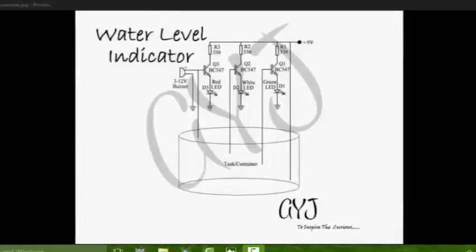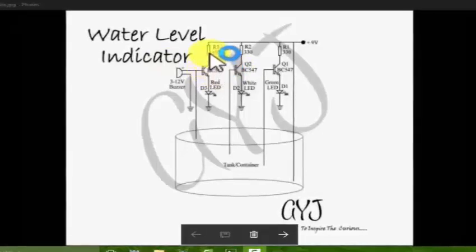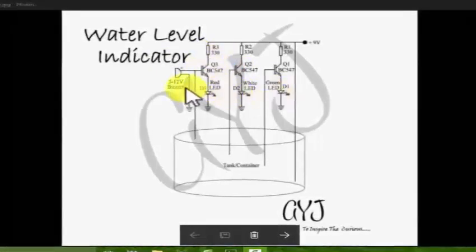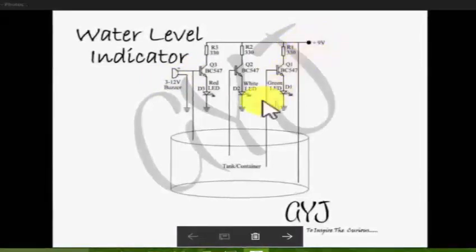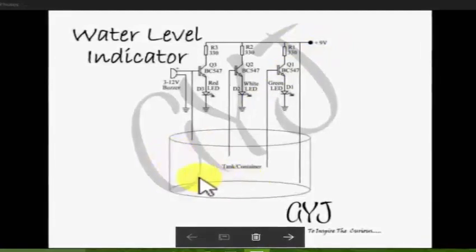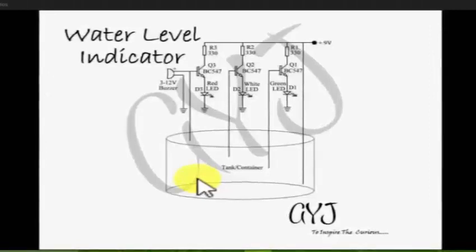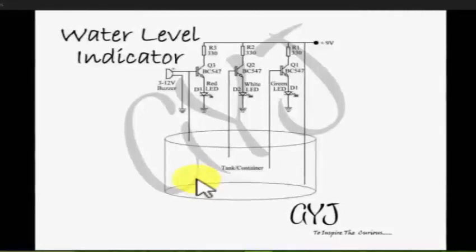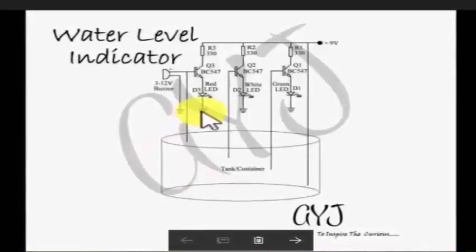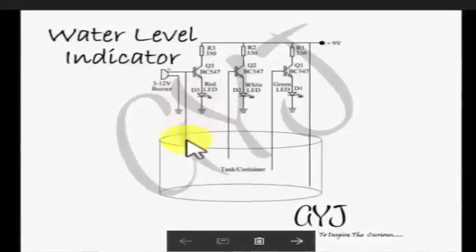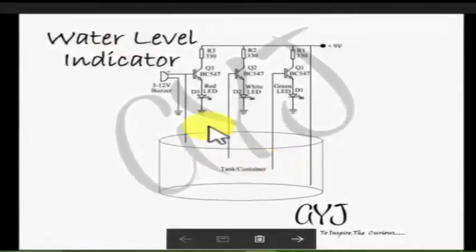Let's go into the schematic. On the screen the circuit diagram is present where the BC547 transistors are connected, these are the resistors, these are the types of LEDs, this is our buzzer, and this is our tank. In the previous session I told you that instead of using the tank you can use different types of switches. These points are our negative terminal and the other terminals are the positive terminals, connected to the positive line.